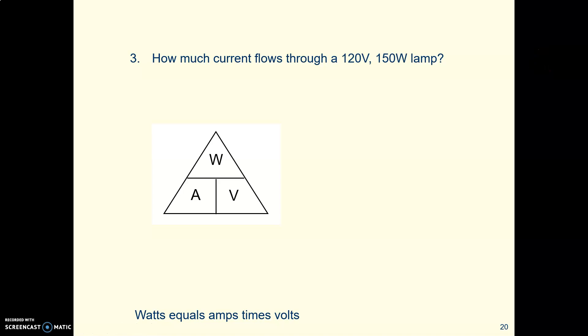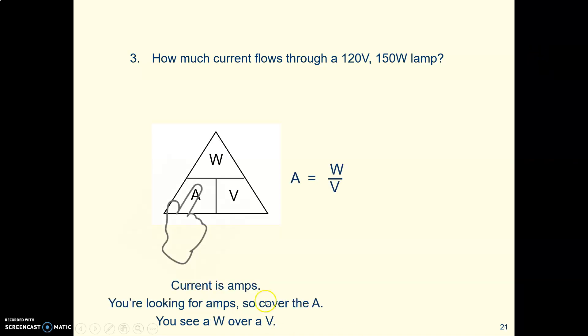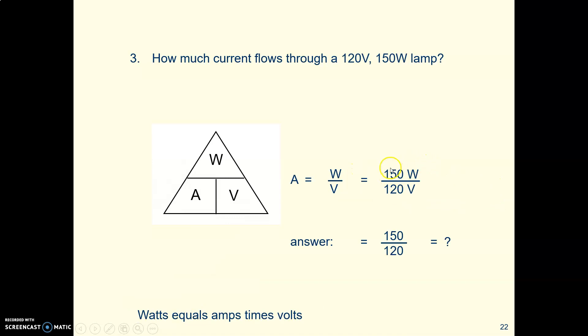It wants to know how much current. So that means you're looking for amps. So you cover up the A with your finger, because you're looking for amps. You're left with a W over a V, in other words, watts divided by volts. You've got 150 watts being pushed by 120 volts. So the current flowing through your wire is 150 divided by 120. And I'll let you figure out what that is.